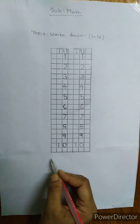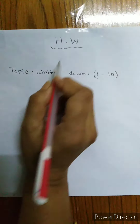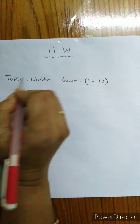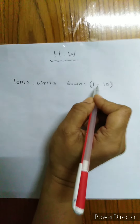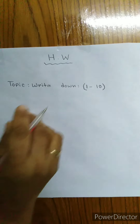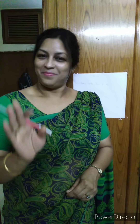Have you understood, everybody, what I am saying? Today, our homework is — topic: write down 1 to 10. This is your homework. Practice this at home. That's all for today. Stay safe and may Allah bless you, my children. Bye-bye.